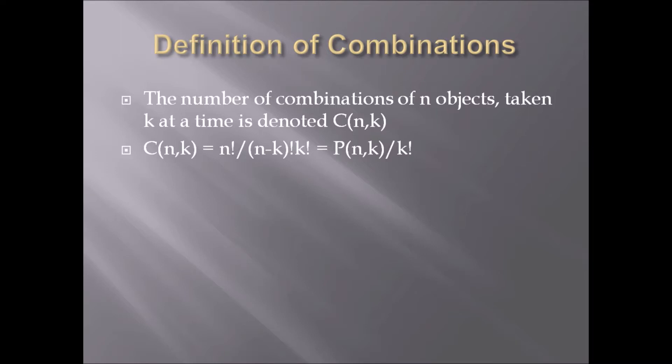And this is equal to P(n,k) / k!. Because we permute the objects, but then, since the roles are not distinguished, we divide by k! to account for that. So we read this as n choose k.